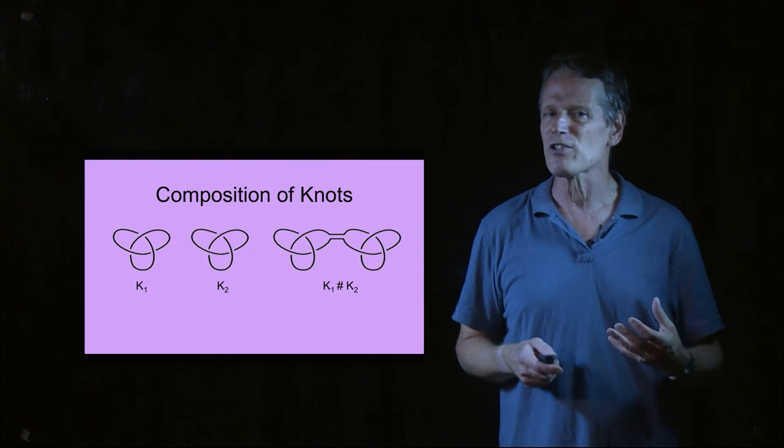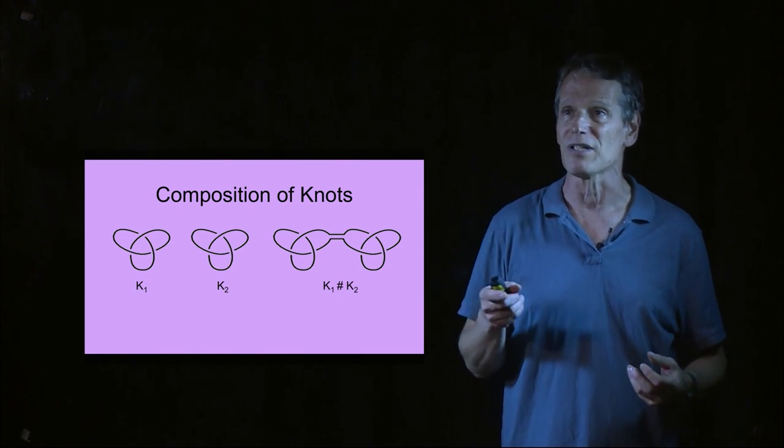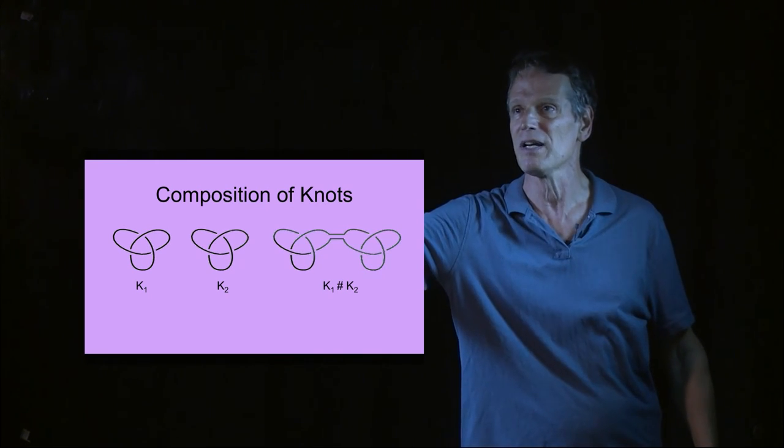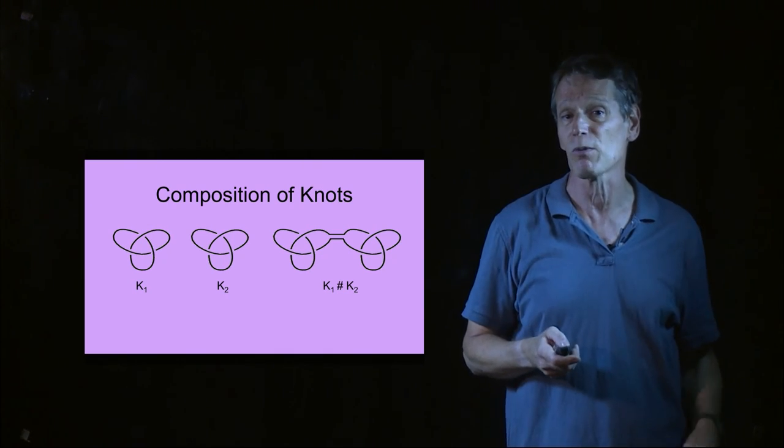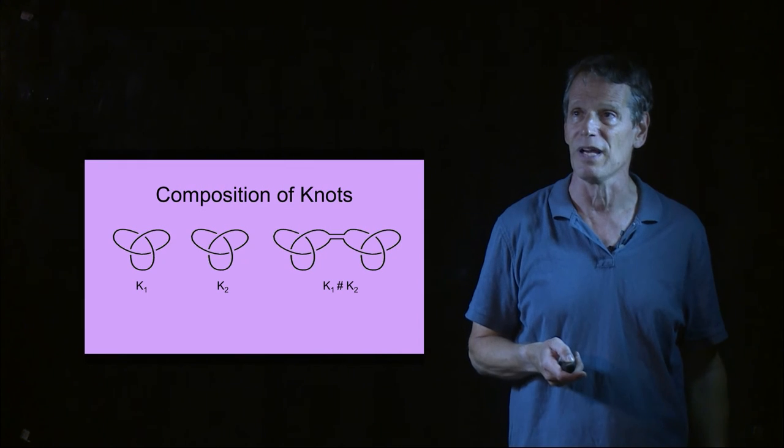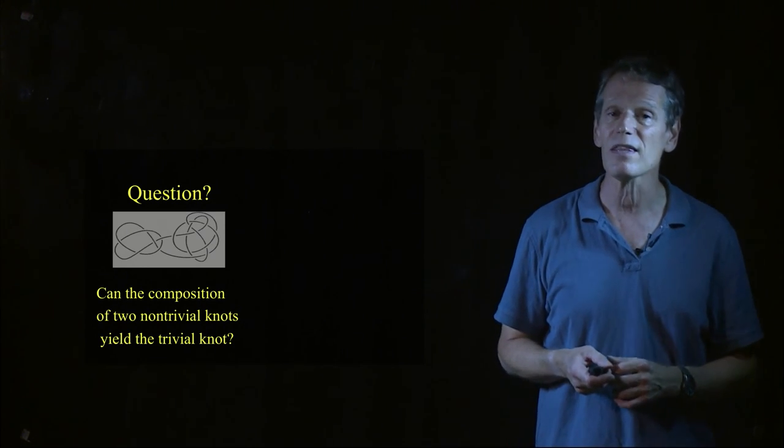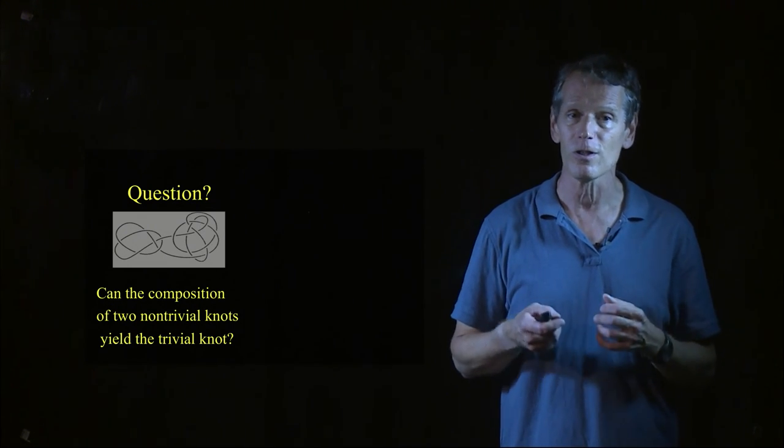Now, I want to look at some operations that you can do to knots. And one of the things you can do to knots is you can take one knot and then you can take a second knot. So I have over here a knot on the far left and then I have another knot right behind it here. And what I've done is I've cut a little piece out of each of them and I've glued them together to create what I would call a composite knot. And here's a fundamental question you can ask. Can the composition of two non-trivial knots yield the trivial knot? And so we're going to try that right now.